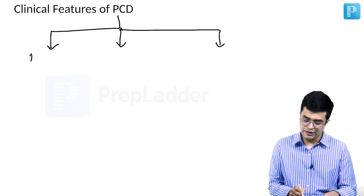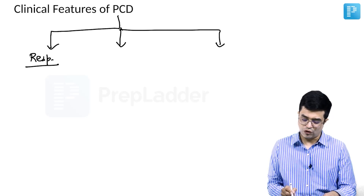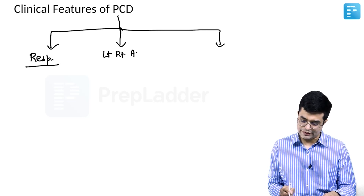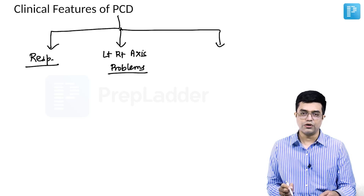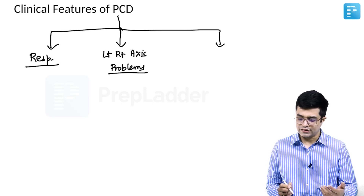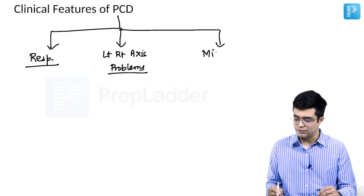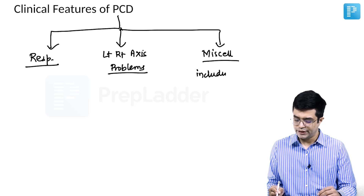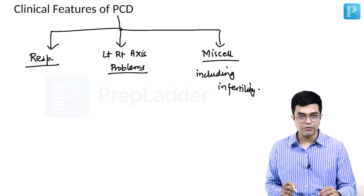The first is respiratory involvement. The second is involvement of the left-right axis, which includes various types of situs inversus, heterotaxy, dextrocardia, etc. The third variety covers miscellaneous problems, including infertility. Let us discuss all three spectrums one by one.